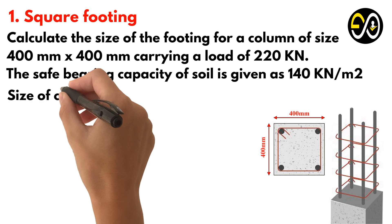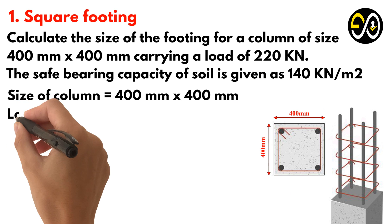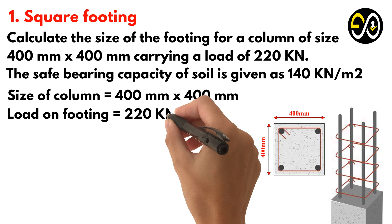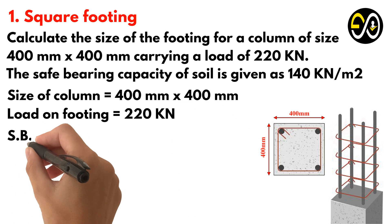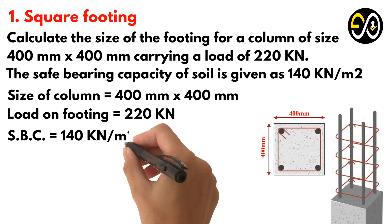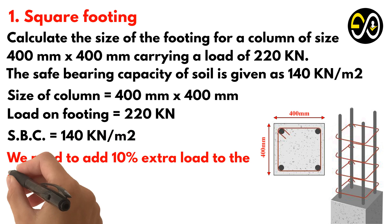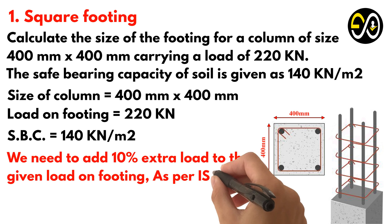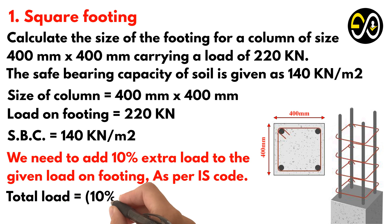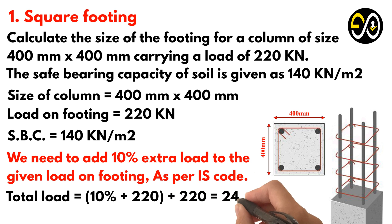Size of column equals 400 mm by 400 mm. Load on footing equals 220 kN. Safe bearing capacity equals 140 kN per square meter. We need to add 10% extra load to the given load on footing, as per IS code. Total load equals 10% of 220, plus 220, equals 242 kN.